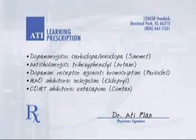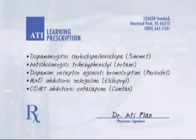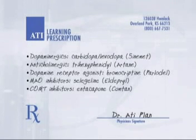Anticholinergics, such as trihexyphenidyl, trade name Artane, are used to control tremors. Dopamine receptor agonists, such as bromocriptine mesylate, trade name Parlodel, activate dopamine release. MAO inhibitors, such as selegiline, trade name Eldepryl, and COMT inhibitors, such as entacapone, trade name Comtan, are used to reduce the breakdown of dopamine.